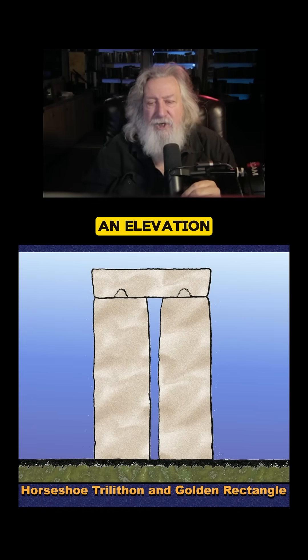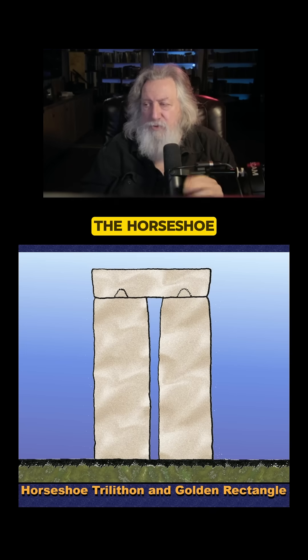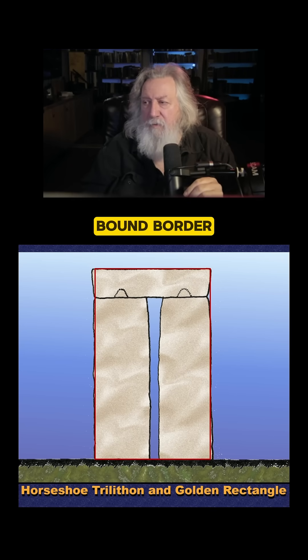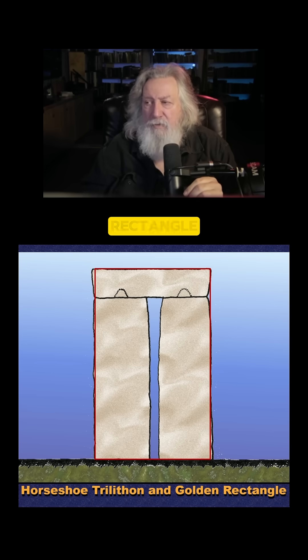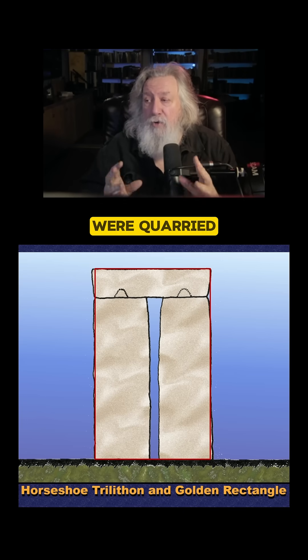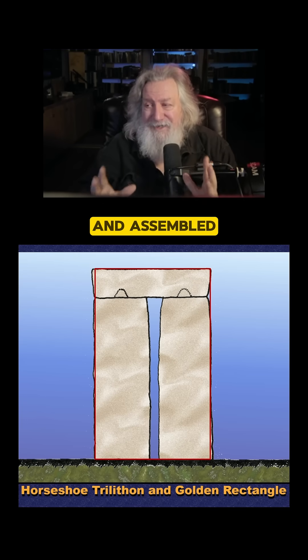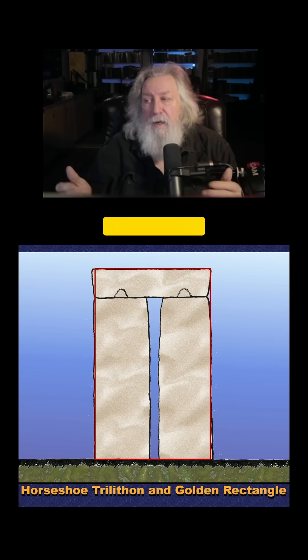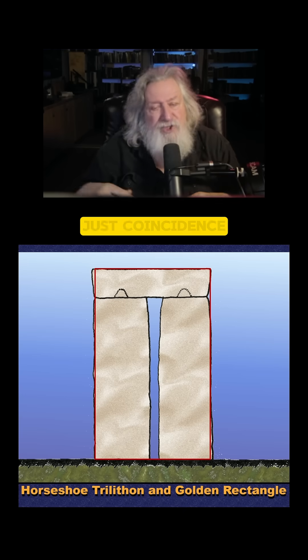And here we have an elevation diagram of the horseshoe trilithon, the big rocks in the middle, and here the red border gives you a golden rectangle. It looks like the five horseshoe trilithons were quarried and shaped and assembled to reproduce the golden rectangle. Either that or it's just coincidence.